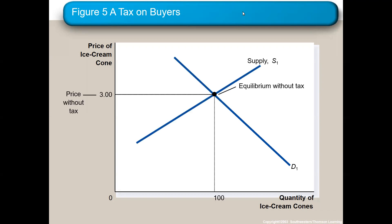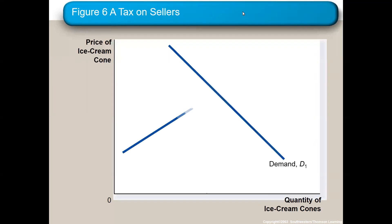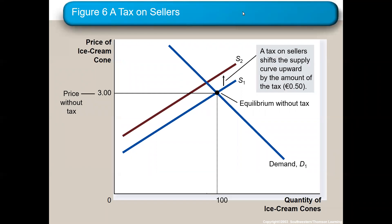Now let's look at the third kind of government control: taxes. If you remember RATS, the T is for technology first and then for taxes. So we're going to have a supply shift. The size of the tax is the difference between those two supply curves — not from one equilibrium to the other. It can be measured at any spot; it's just the difference between the two supply curves, and that tells you how much the tax is.